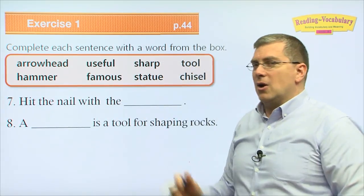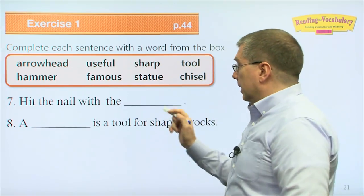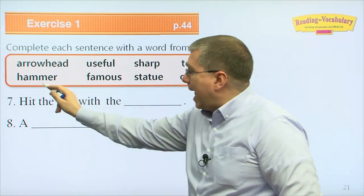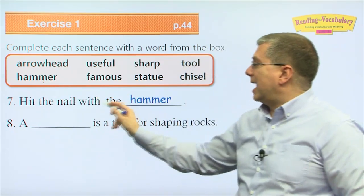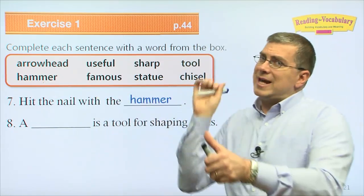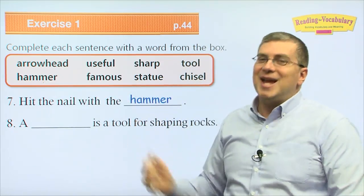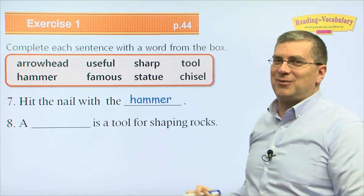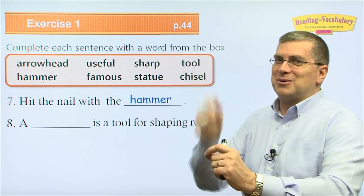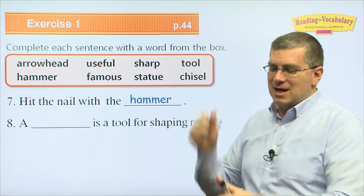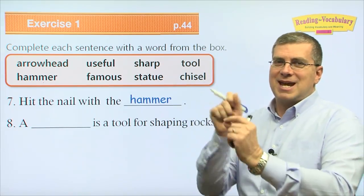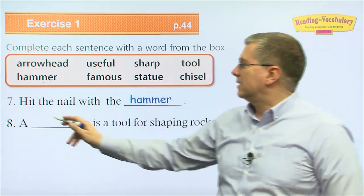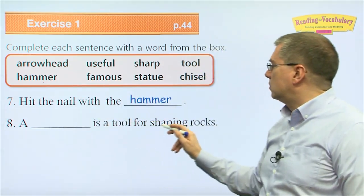Number seven: hit the nail with the blank. What do you use with a nail? You use a hammer. Hit the nail with the hammer. Be careful — watch out! If you're using a hammer, don't hit your thumb; hit the nail.